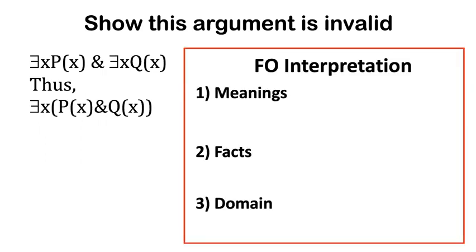An FO, a first-order interpretation, and a counterexample is a type of interpretation on which the premises are true and the conclusion false. An interpretation is just three things. It's a way of assigning meanings to the non-logical symbols like these predicates P and Q or if you have any names in there you'd have to assign what does the name A mean or Pia mean etc.